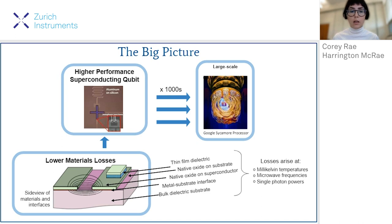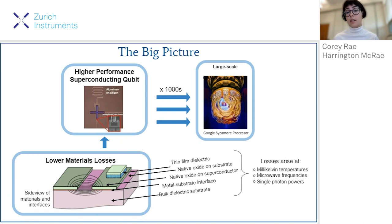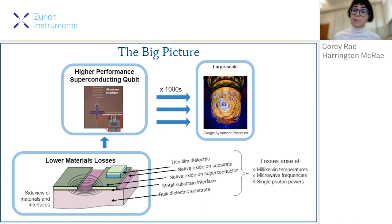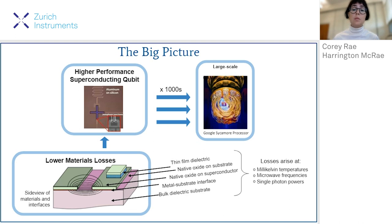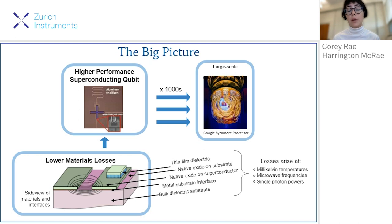We have our bulk dielectric substrate which contributes, but also surface oxides and contamination and defect layers between materials. These dielectric losses arise in the regime that superconducting qubits operate — an extreme regime: millikelvin temperatures, microwave frequencies, and ultra-low single-photon powers. This is a very difficult regime to probe with standard materials characterization methods, so we end up measuring the devices themselves to learn more about these materials losses.